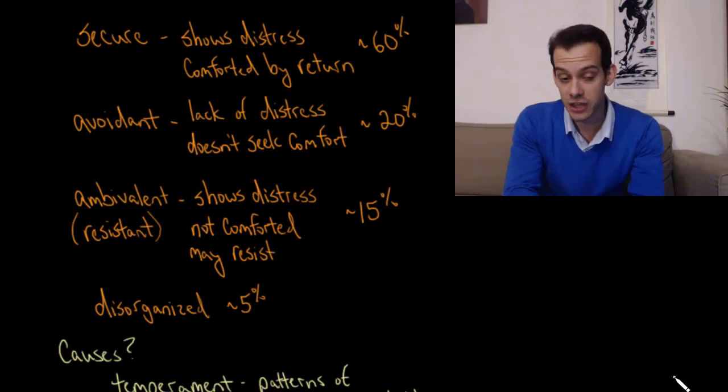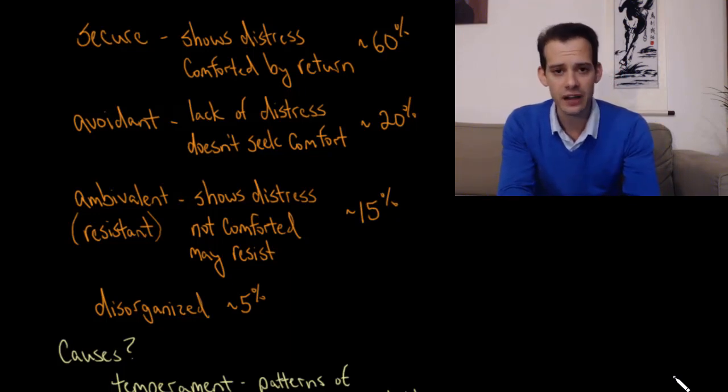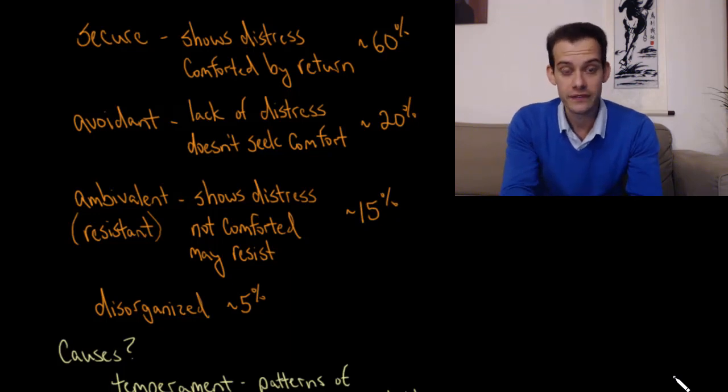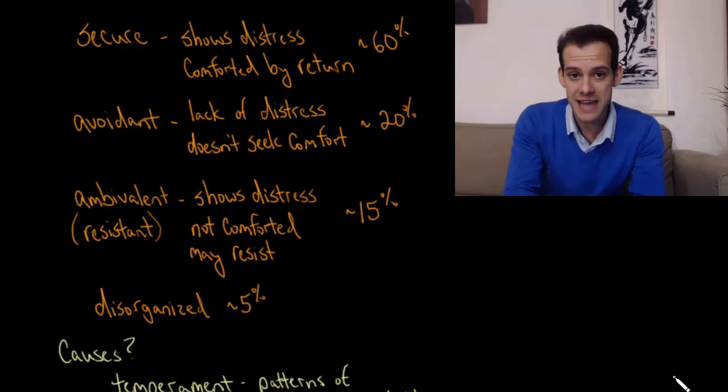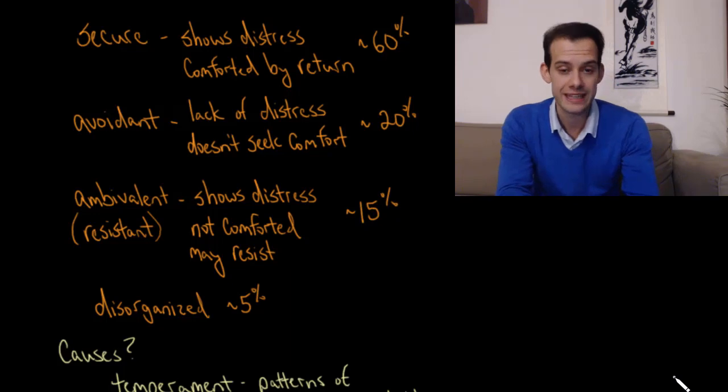Not all infants show this. Some show what's called an avoidant attachment, or insecure avoidant attachment. In this case, when the mother leaves, the child doesn't seem disturbed by this. They don't show the same type of distress. Consequently, when the mother returns, they also don't seek comfort from the mother. They don't seem to have this secure attachment. They seem almost avoidant, like they don't really care whether the mother is there or not. About 20% of American children will show this avoidant attachment.